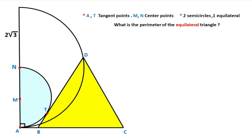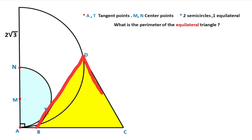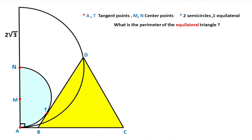Hello everyone. In this video we have two semicircles and one equilateral triangle. Points M and N are given as centers of the semicircles, and points A and T are given as tangent points. The radius of the big semicircle is given as 2√3, and the question is: what is the perimeter of the equilateral triangle?